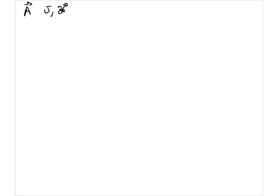This time I would like to do the same thing — use the same two vectors: A of magnitude 5 and direction 30 degrees, and B of magnitude 2 and direction 150 degrees. This time I would like to add them up, but using mathematics — not graphically.